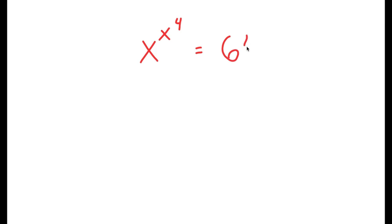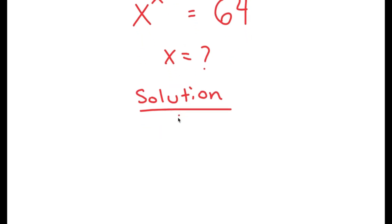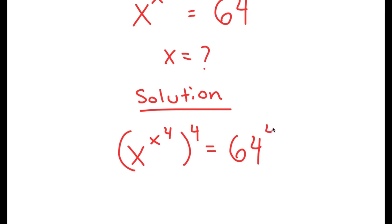In this video, I'm going to solve the equation x to the power of x to the power of 4 is equal to 64. The variable I want to find is x. I'm going to start by taking the power of 4 on both sides, so I get x to the power of x to the power of 4, to the power of 4, is equal to 64 to the power of 4.